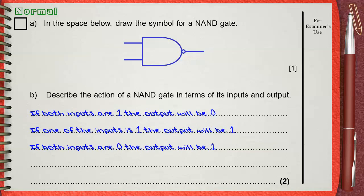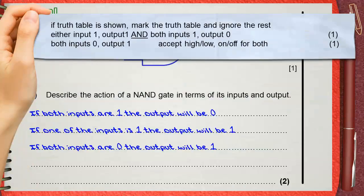Now let's see how the mark scheme will judge this. The mark scheme says that if truth table is shown, mark the truth table and ignore the rest. This means that the truth table is enough to answer. You can also say that if only one input is 1, the output will be 1. And if both inputs are 1, the output will be 0.